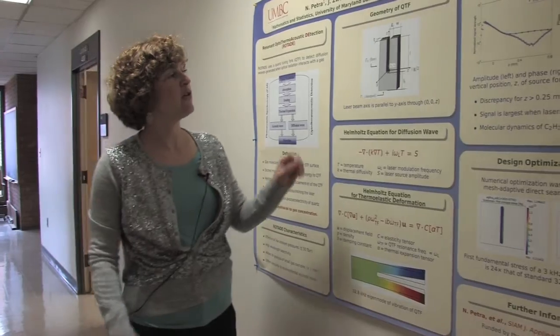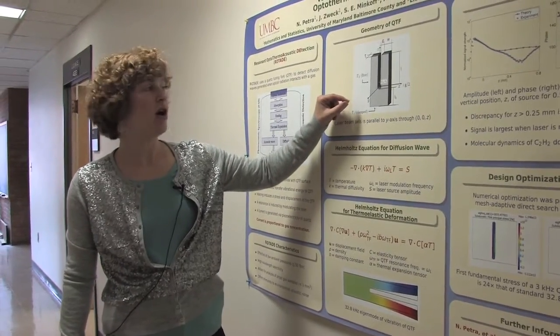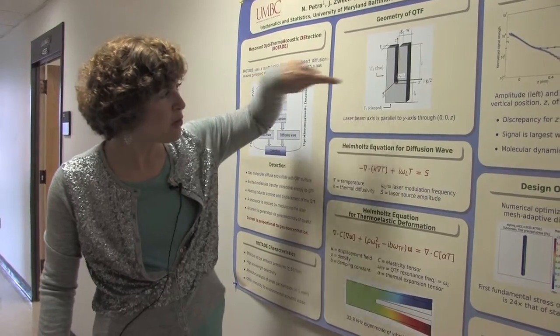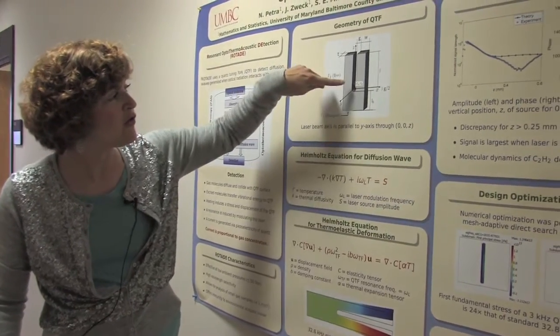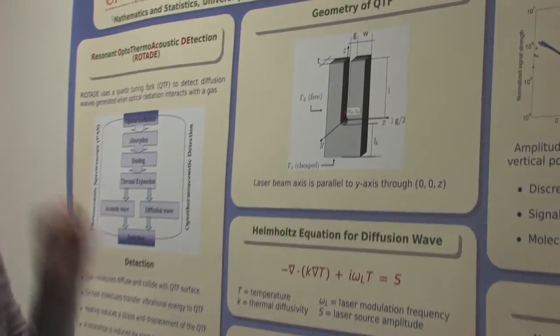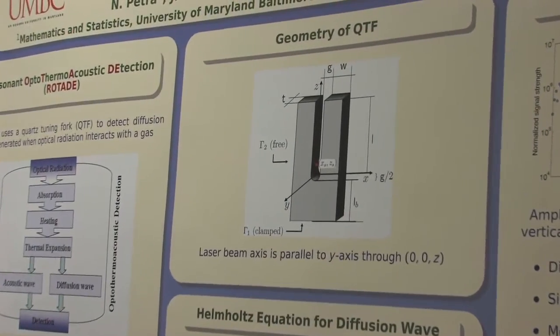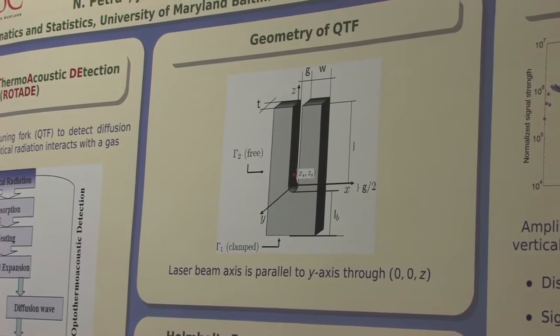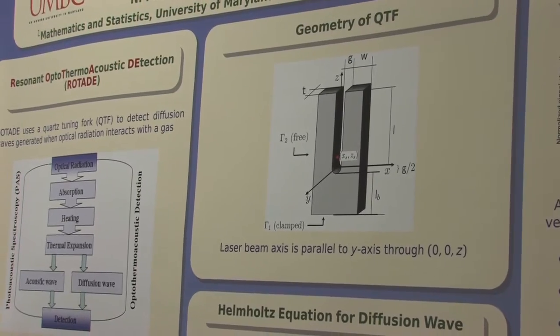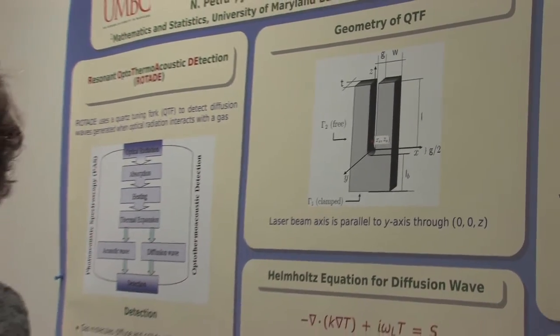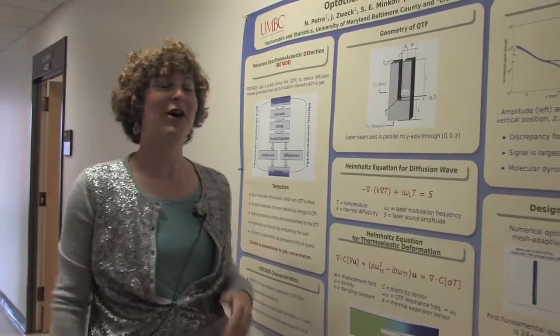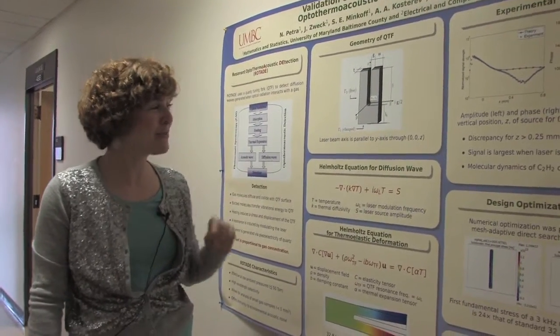The idea of the sensor is that there's a laser that would shine in, in this direction into the paper, so the Y direction, and you see it would be centered at this red dot. And you shine the laser in, and the idea is that you're trying to detect some particular kind of gas. So let's say you're trying to detect carbon dioxide. And we're most interested in small amounts of these gases, trace gases. You're not interested in being in a room that's 100% carbon dioxide. You want a small amount of the gas.